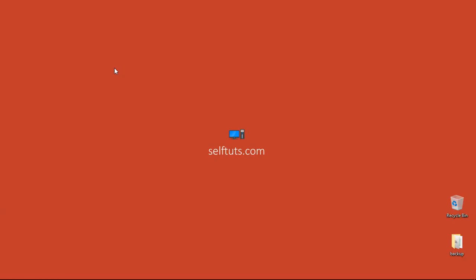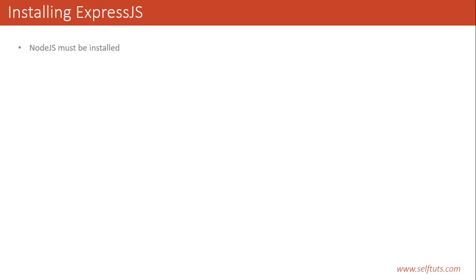Hello people, this is Selv Tuts and we are continuing our series on understanding the concept of Express. In this video we will see how to install Express. Before installing Express we must satisfy some prerequisites: Node.js must be installed in your system. To check if Node.js is present, you need to fire the command node -version. You also have to have npm in your system, which is a node package manager.